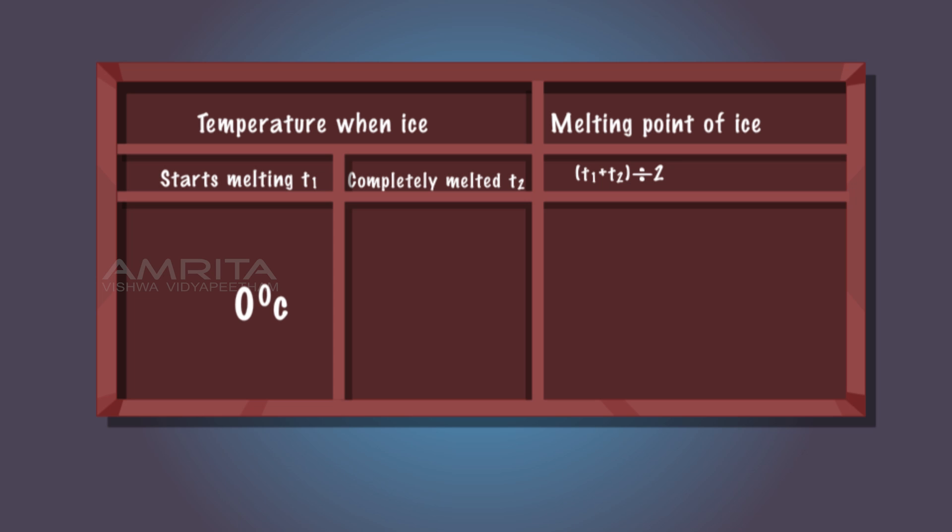The average of the two temperatures gives the melting point of ice. The melting point of ice is zero degrees Celsius.